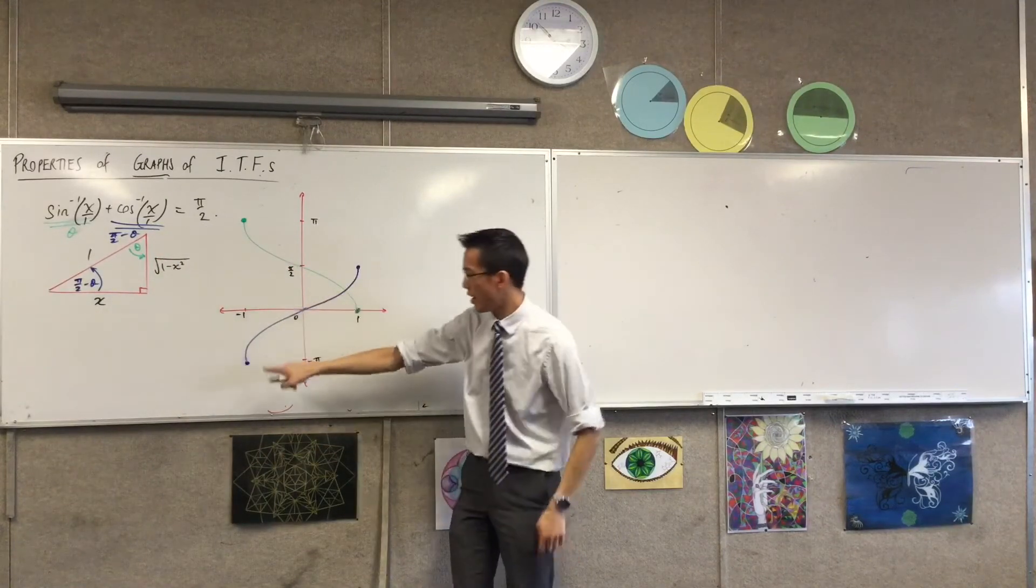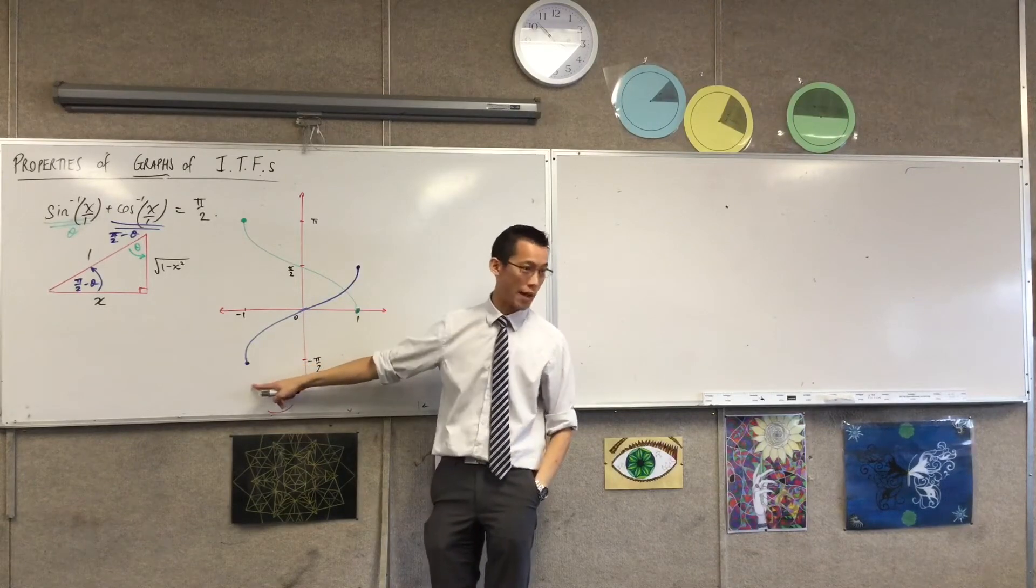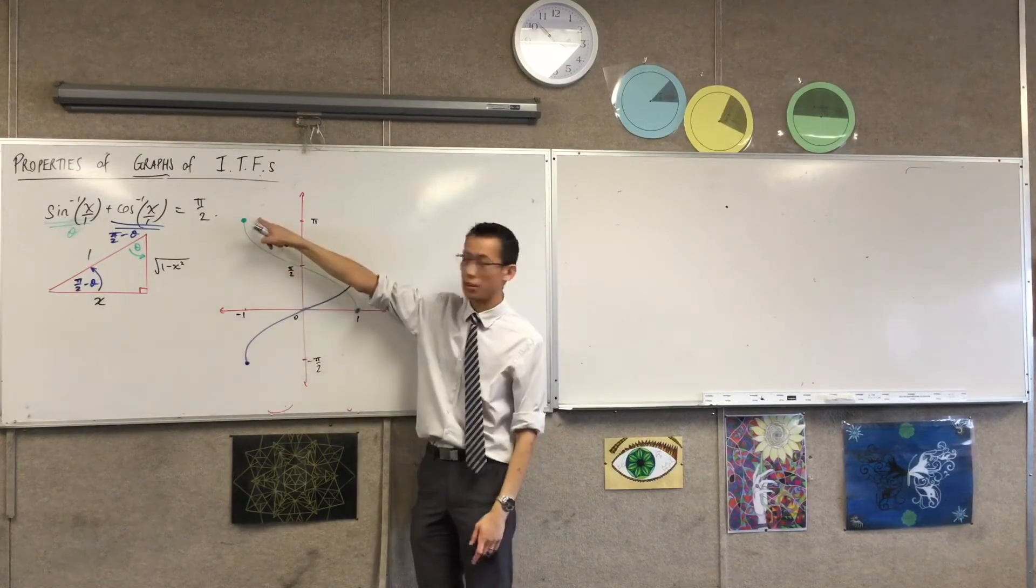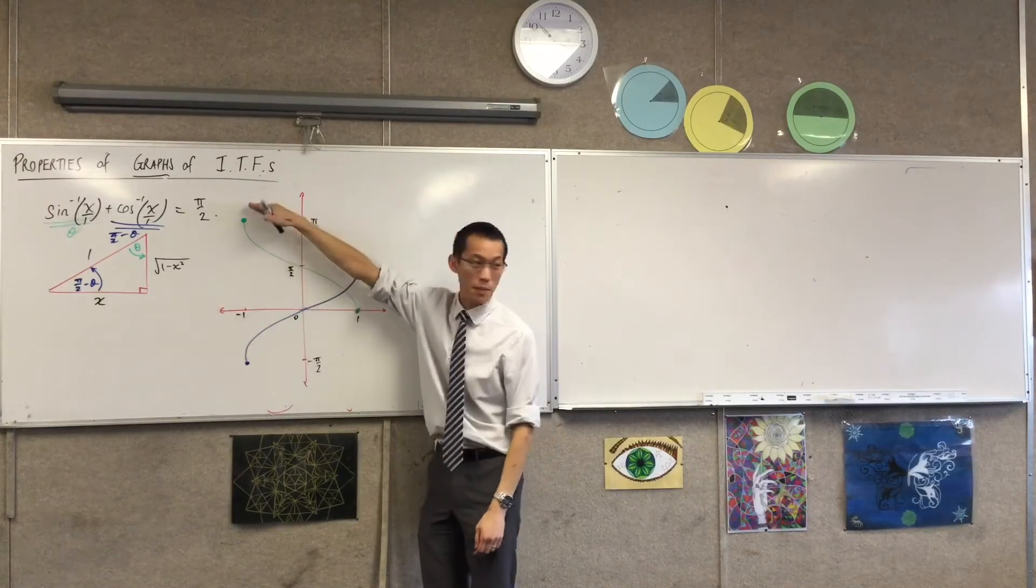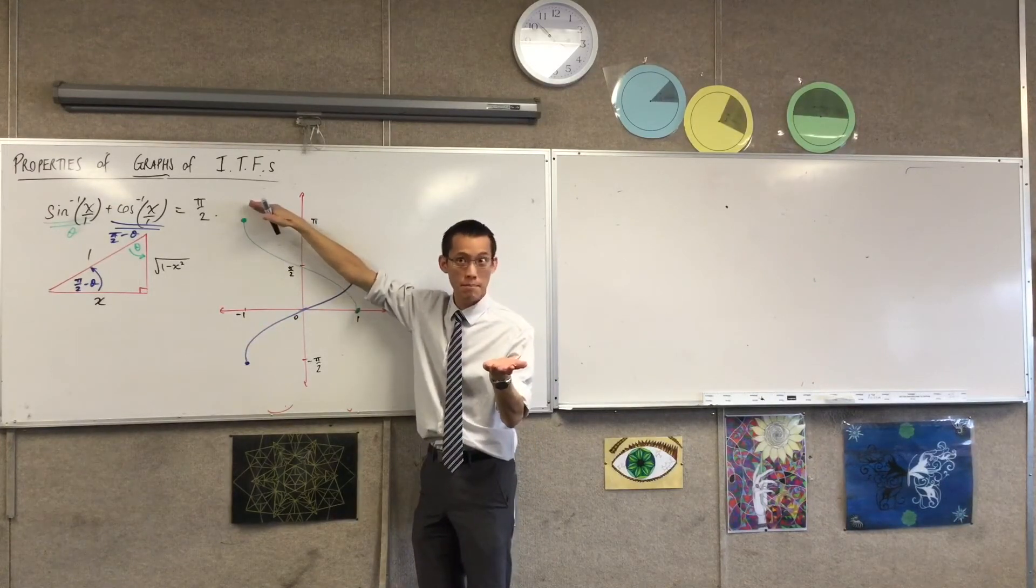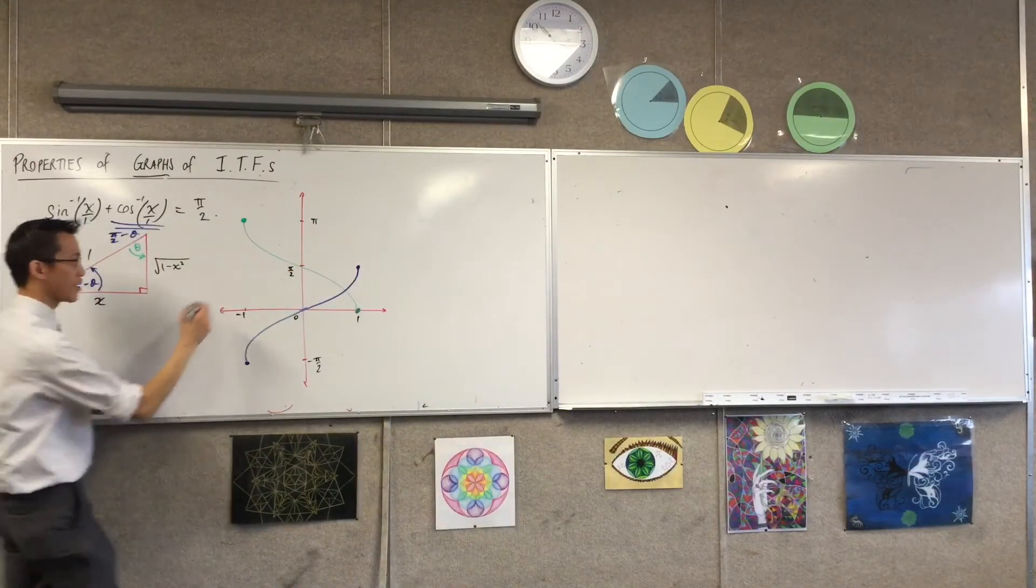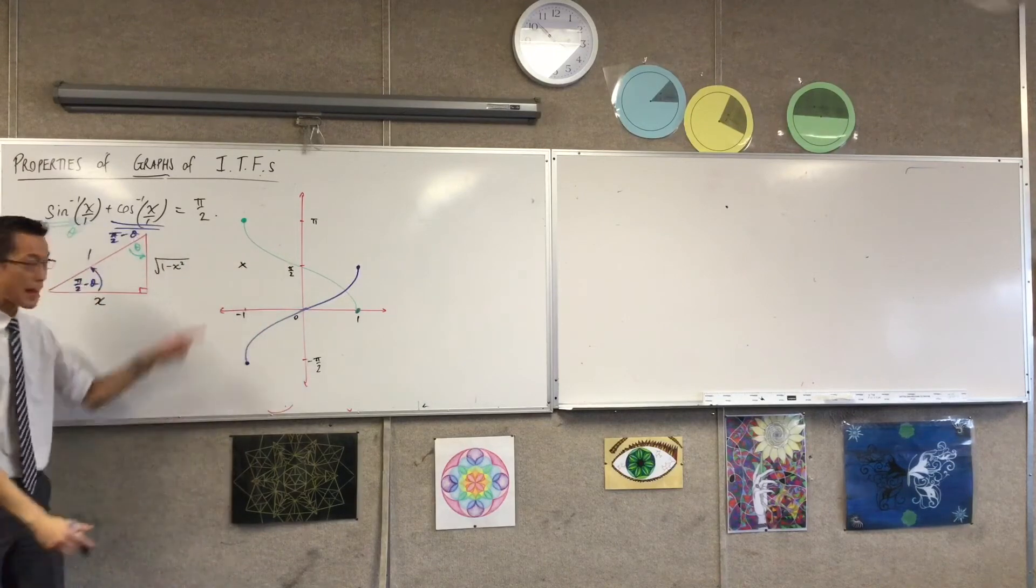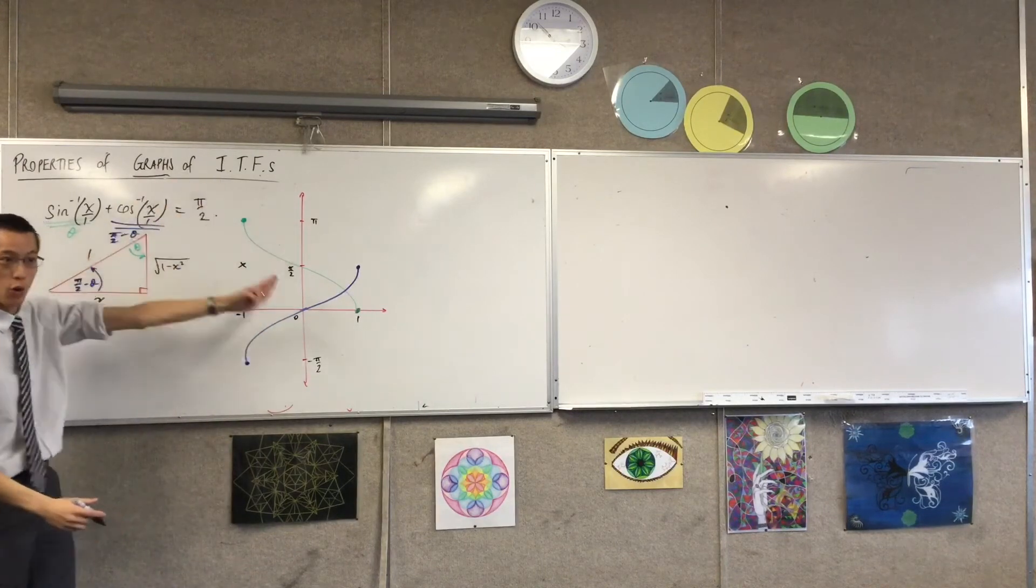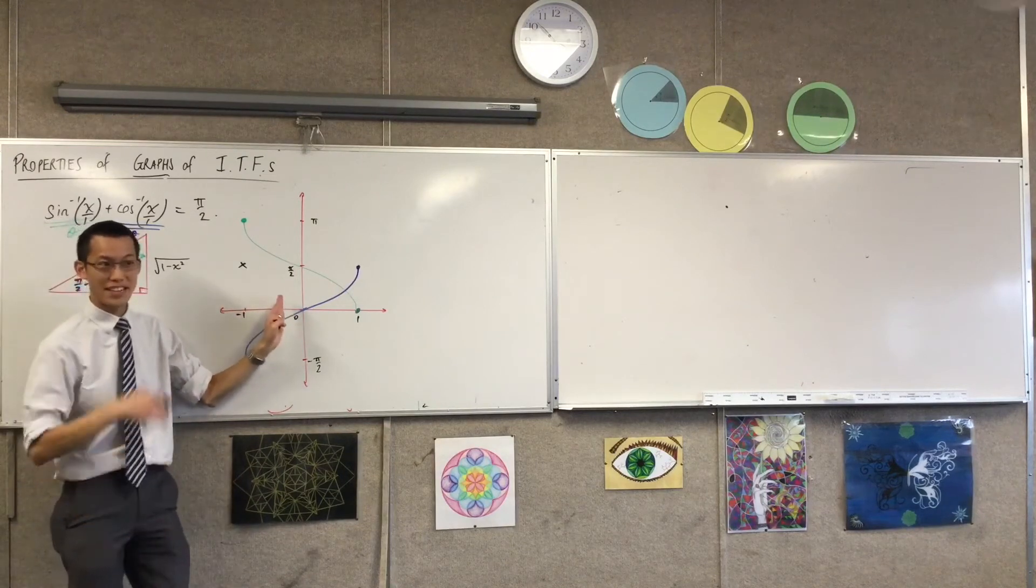For instance, over here, way on the left, when x equals negative 1, I know what the sine inverse graph is equal to, and I also know what the cosine inverse graph is equal to. Negative pi on 2 plus pi. Negative pi on 2 plus pi? It's pi on 2, right? So I should be up there. So that is in line with both of these, all the way over at negative 1.